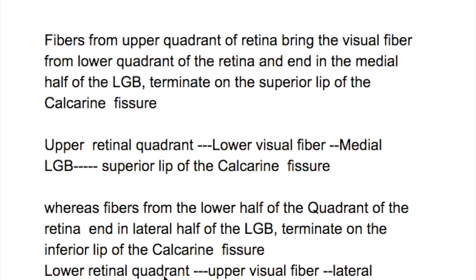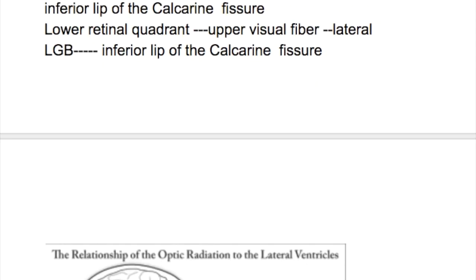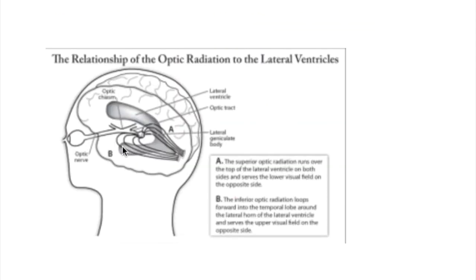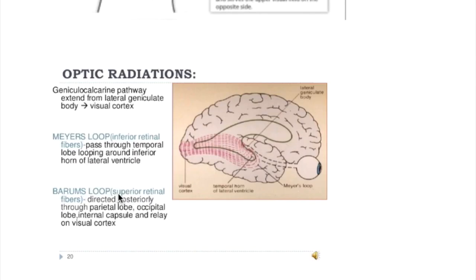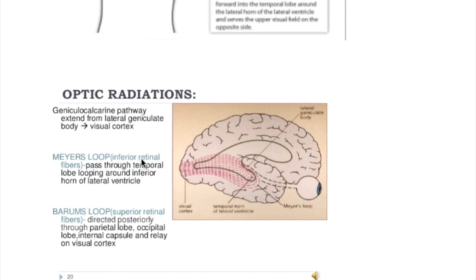The lower retinal quadrant fibers carry the upper visual field fibers and end up in the inferior lip of the calcarine fissure. The upper retinal fibers loop around the inferior horn of the lateral ventricle via Meyer's loop and then pass into the visual cortex. The lower ones pass through the parietal lobe and through the internal capsule to reach the visual cortex. Meyer's loop brings the inferior retinal fibers looping around the lateral ventricle, while Baum's loop passes through the internal capsule bringing the superior retinal fibers.